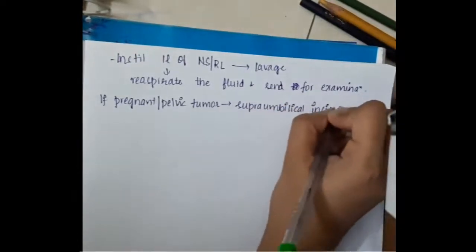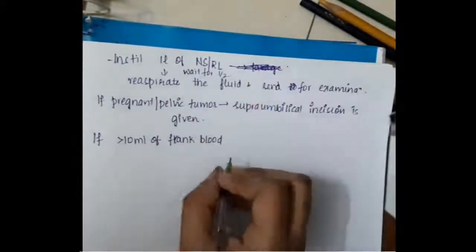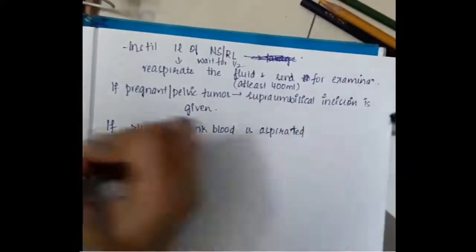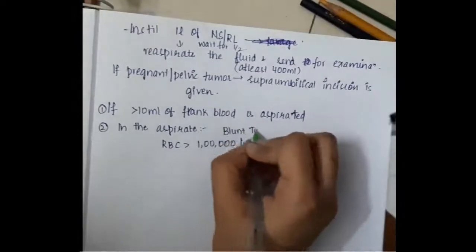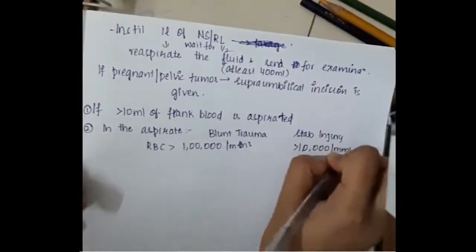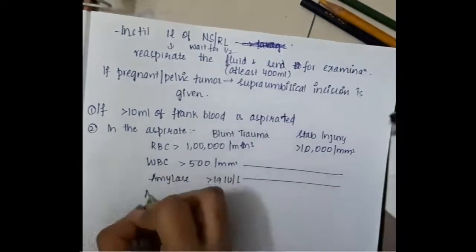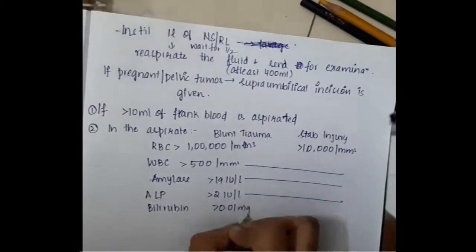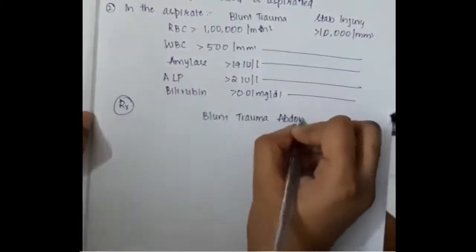If the patient is pregnant or has a pelvic tumor, a supra-umbilical incision is used. DPL is considered positive if: more than 10 ml of frank blood is aspirated; RBC more than 1 lakh per mm³ in blunt trauma; RBC more than 10,000 per mm³ in stab injury; WBC more than 500 per mm³; amylase more than 19 IU/L; alkaline phosphatase more than 2 IU/L; or bilirubin more than 0.01 mg/dL.